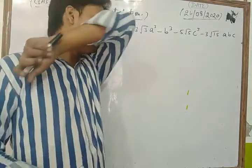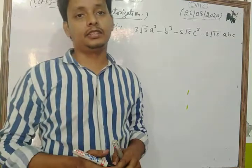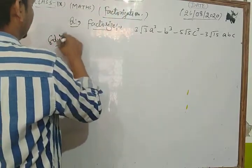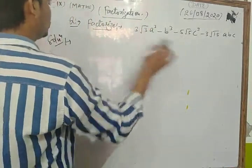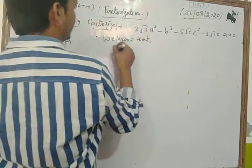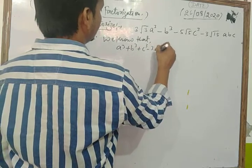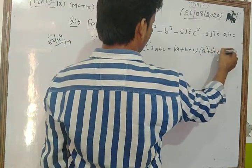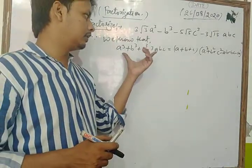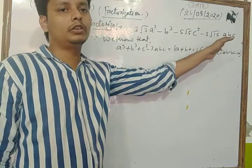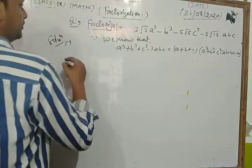This is a very important question from your NCERT exercise. In every question of this type, first write the identity: a³ + b³ + c³ - 3abc = (a + b + c)(a² + b² + c² - ab - bc - ca). Always write the identity first in your copy, then form the given question based on that identity.